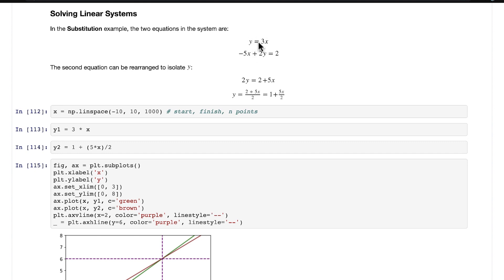The first equation, y is already isolated. For the second equation, we can rearrange it pretty easily. We move -5x over to the other side of the equation, giving us 2y = 2 + 5x.